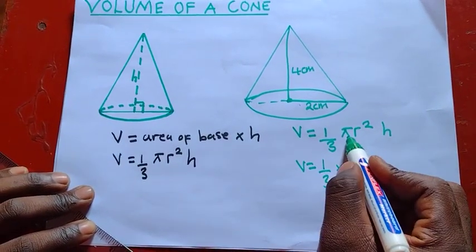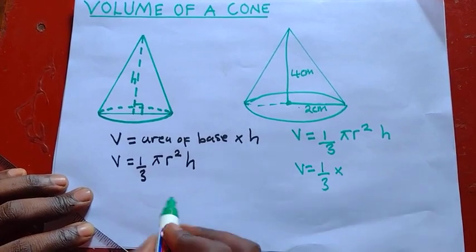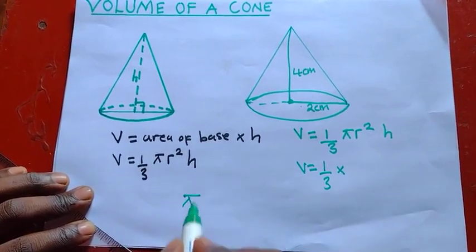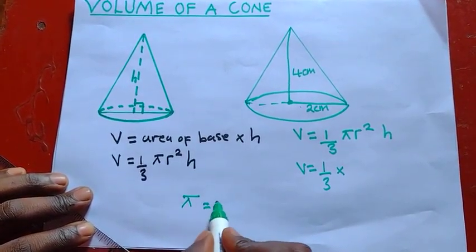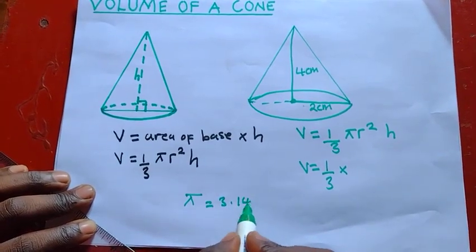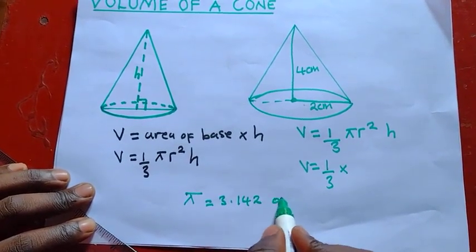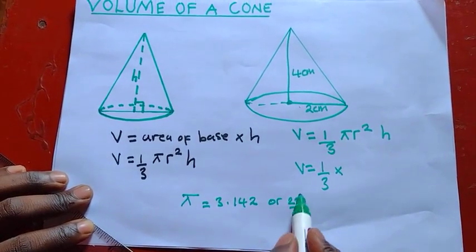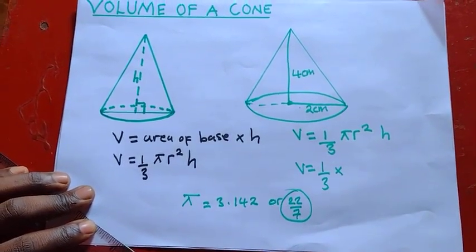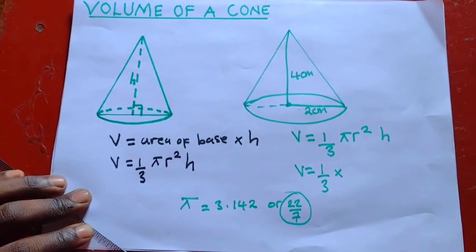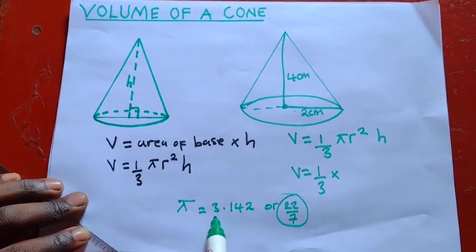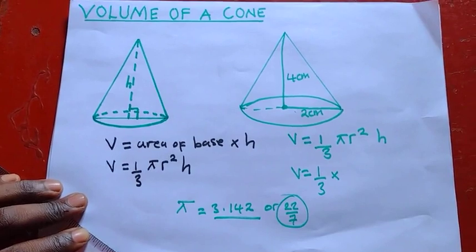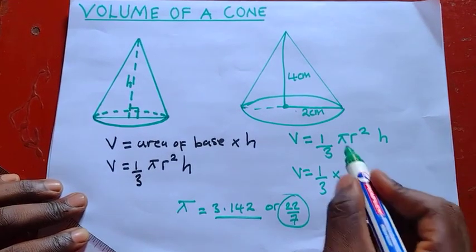We say 1 over 3 times. So you find that in paper 2, the value of this π, value of π can be π equal to 3.142 or 22 over 7. But for 22 over 7, it's normally used in paper 1, okay? So in paper 2, you are going to use this value of π, 3.142.